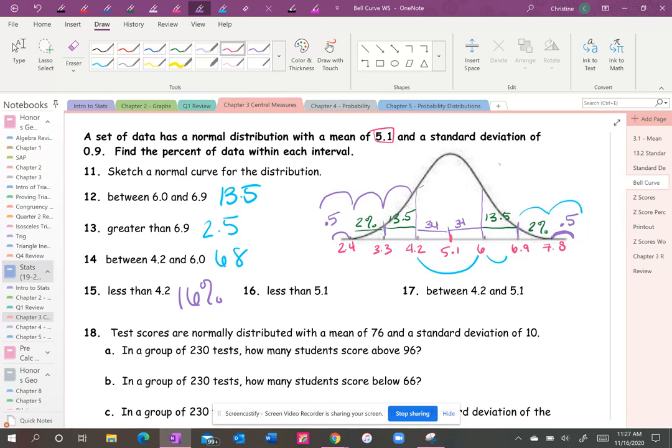Less than 5.1, well 5.1 is the median, so that's the halfway point, so the other half is the other 50 percent. And then between 4.2 and 5.1 is 34 percent.